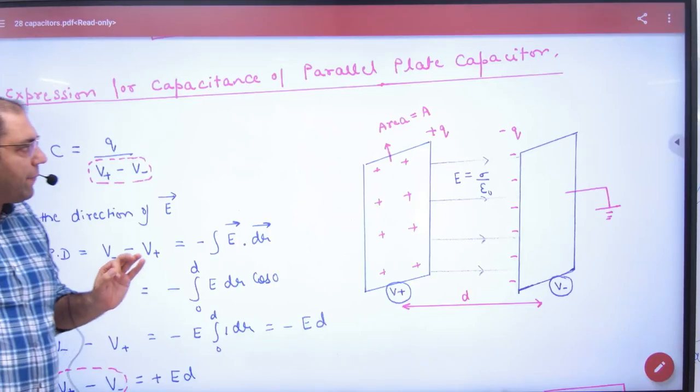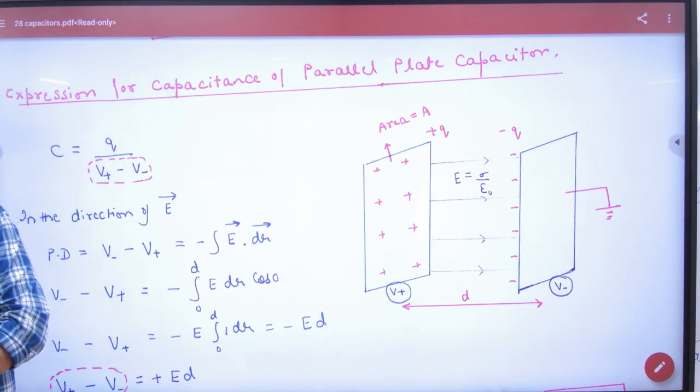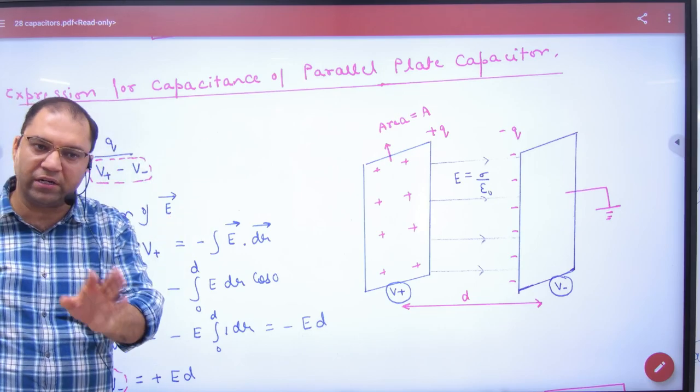Topic is Expression for Capacitance of a Parallel Plate Capacitor. This NCERT topic can come in the form of this derivation.